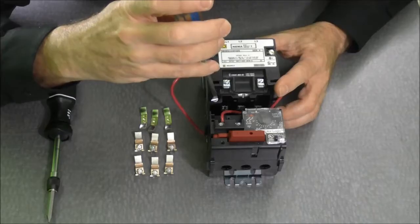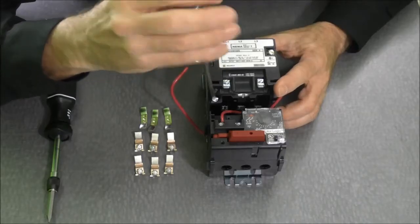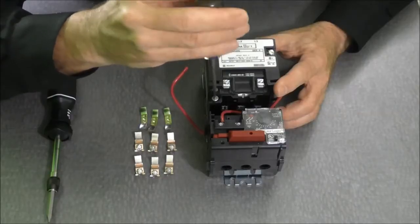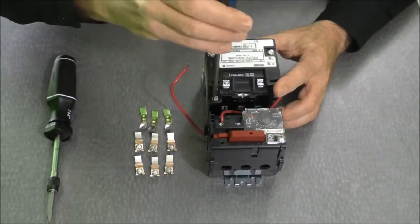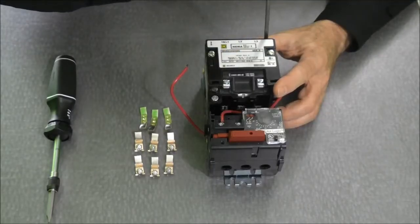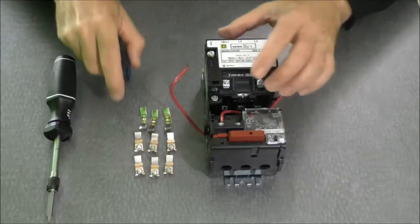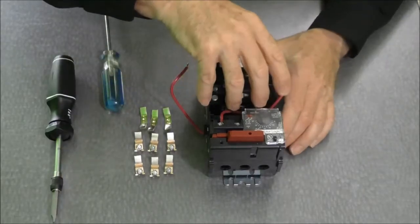The contactor has two screws. They are diagonal. We will loosen them and we'll be able to take the coil and the contact carrier and contacts off in one piece.